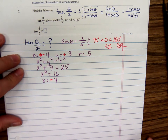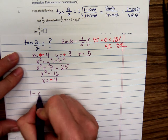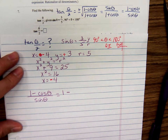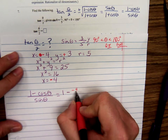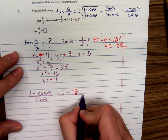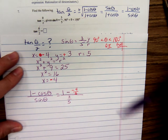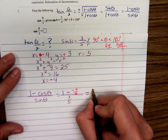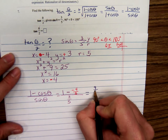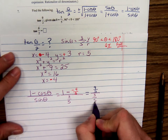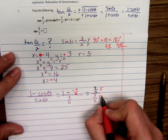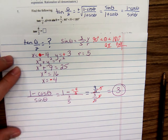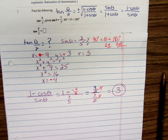Now, which one of these do I want to use? I'm going to use (1 minus cosine theta) over sine theta. So it would be 1 minus cosine theta, which is x over r, so negative 4 over 5, all over sine theta — that's what we were given, 3 over 5. The minus and negative would be plus. So 1 plus 4 fifths is 9 over 5, all over 3 over 5. Multiply above and below by 5. We have 9 over 3, which is 3. So tangent theta over 2 would be 3 on this problem.